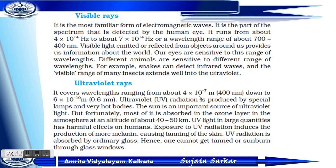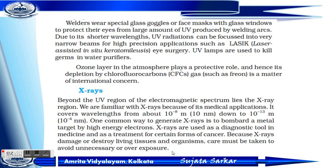Ultraviolet radiation is produced by special lamps and very hot bodies. The sun is an important source of ultraviolet light, and most of it is absorbed in the ozone layer at an altitude of about 40 to 50 kilometers. UV rays in large quantities have harmful effects on humans. Exposure to UV radiation increases the production of more melanin, causing tanning of the skin. UV radiation is absorbed by ordinary glass, so one cannot get tanned through glass windows. Welders wear special goggles or face masks to protect their eyes from UV produced by welding arcs.